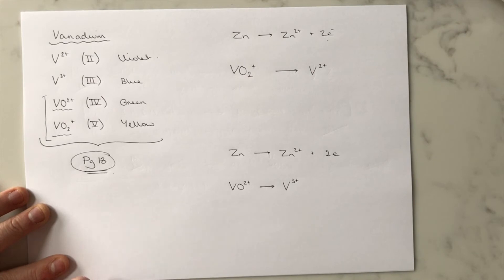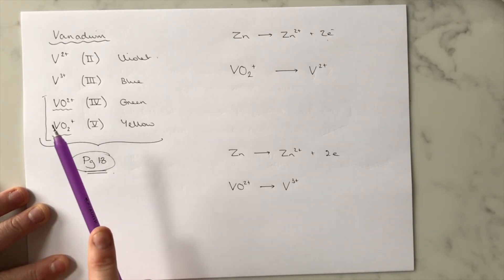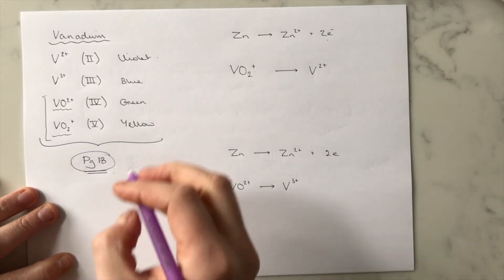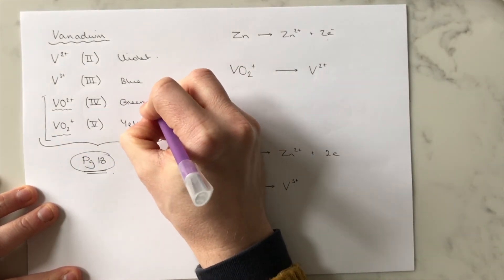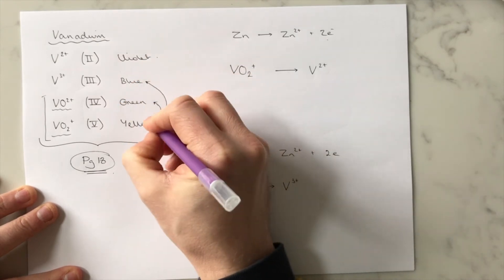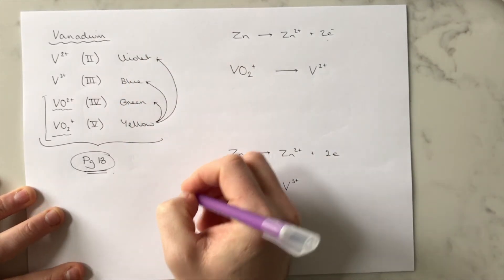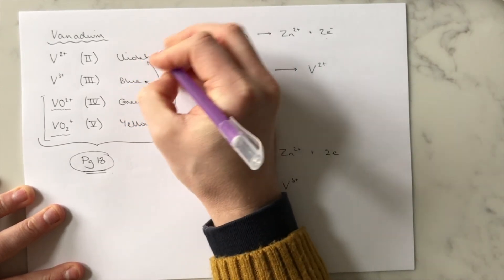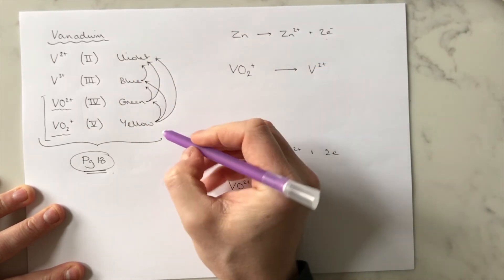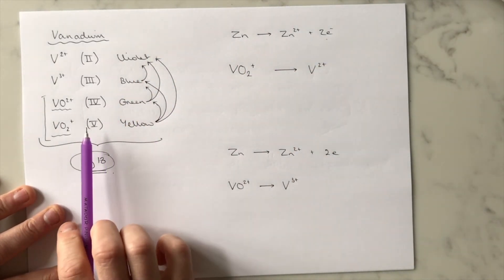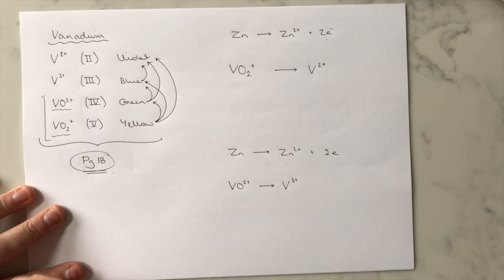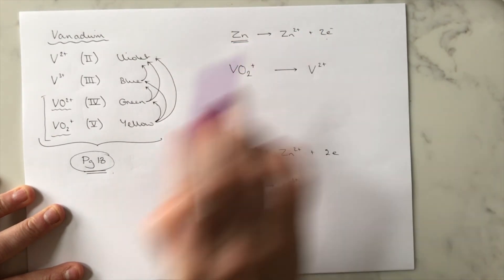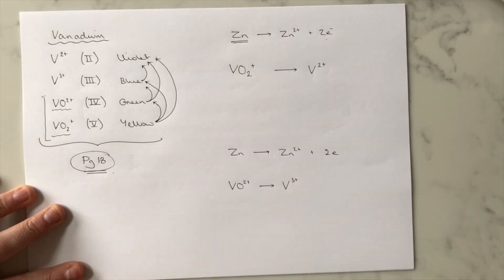You need to be able to construct half equations for the conversion of any of these vanadium ions to reduce them to a lower oxidation state — for example, +5 down to +4, +3, or +2; or +4 down to +3 or +2; or +3 down to +2. The reducing agent used is zinc, and zinc always gets oxidised up to Zn²⁺, releasing two electrons.